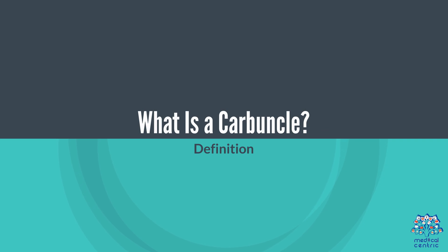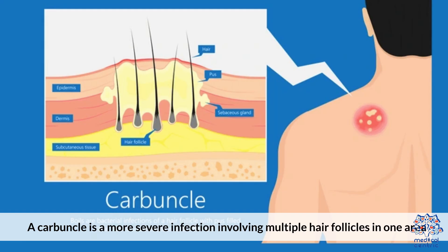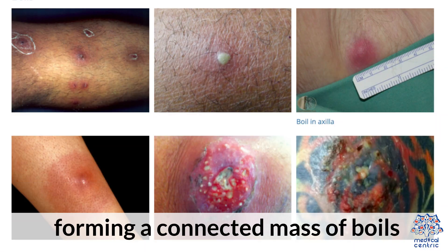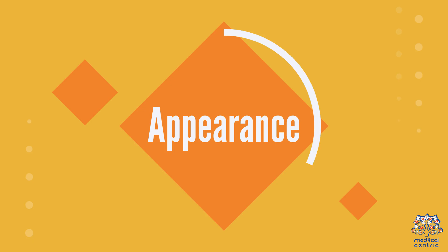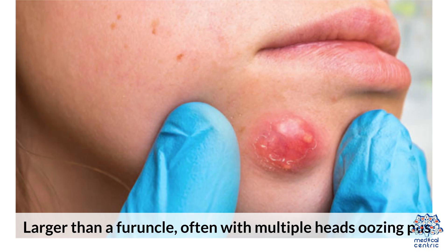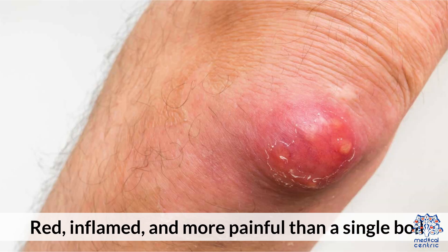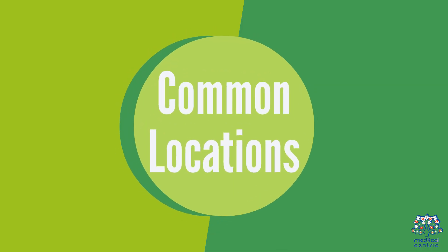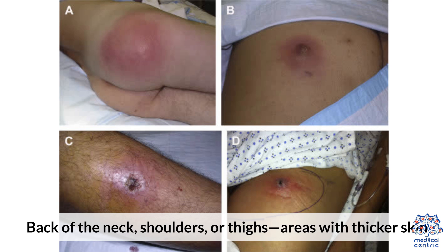What is a carbuncle? A carbuncle is a more severe infection involving multiple hair follicles in one area, forming a connected mass of boils. It is larger than a farruncle, often with multiple heads oozing pus, and is red, inflamed, and more painful than a single boil. Common locations include the back of the neck, shoulders, or thighs — areas with thicker skin where bacteria can spread easily.